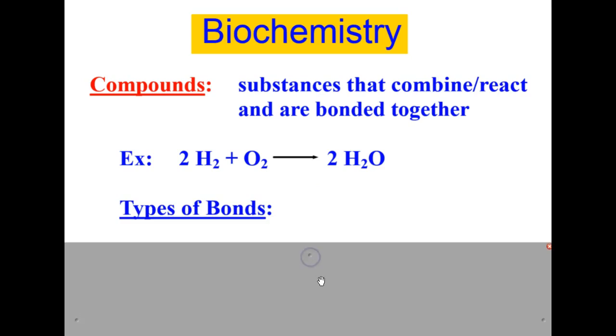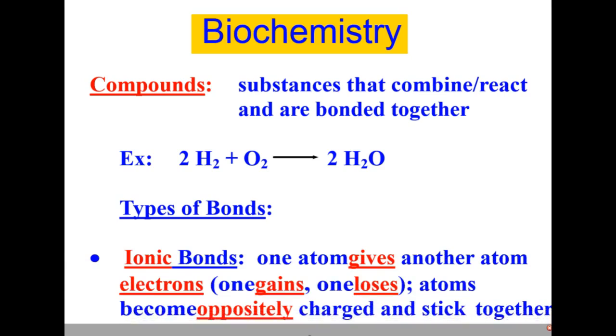There are two types of bonds. There are ionic bonds. Ionic bonds have one atom gives another atom electrons. Therefore, one atom gains and one atom loses those electrons. The atoms become oppositely charged and stick together.